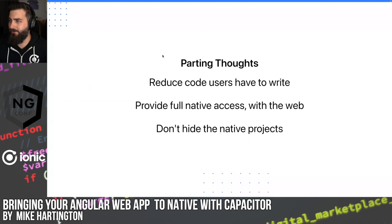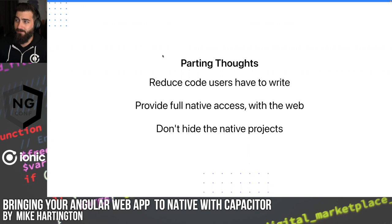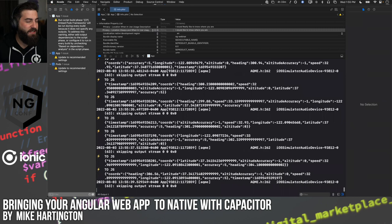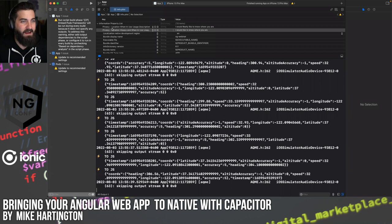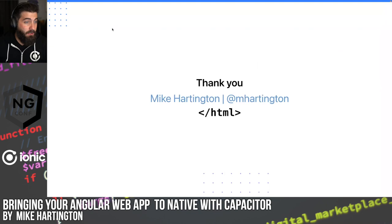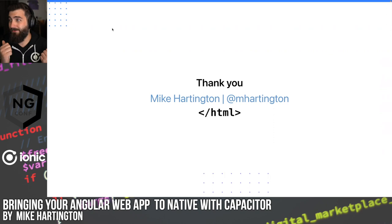Quick parting thoughts: cross-platform here means we reduced the location tracker to about five lines of code. I don't have to maintain location services in the background — I know exactly what I need to maintain. If you want full native access to Swift or Java code, you can do that too. Opening Xcode and modifying Info.plist isn't a scary thing — native projects are pretty simple to deal with these days. The web app is the part we want to write in. Thank you so much — I'd love to go to questions now. You can find me on Twitter at mhardington.